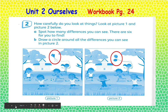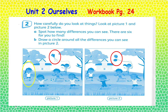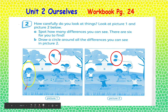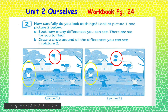Now what else did you find? Look at the girl using a skipping rope. In picture number one, the girl is using the skipping rope. But in picture number two, the girl is using a hula hoop. Let's find the other difference.